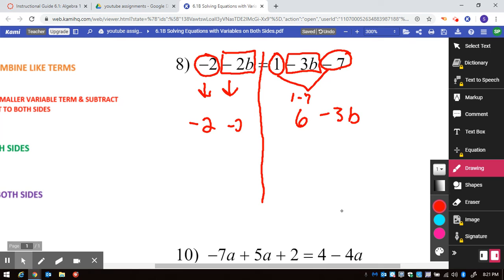Minus 2, minus 2B. So now, if I go back to the fact that I have constant variable equals constant minus a variable.